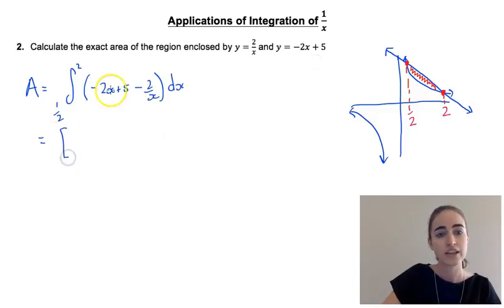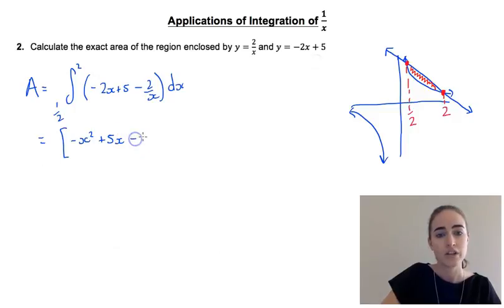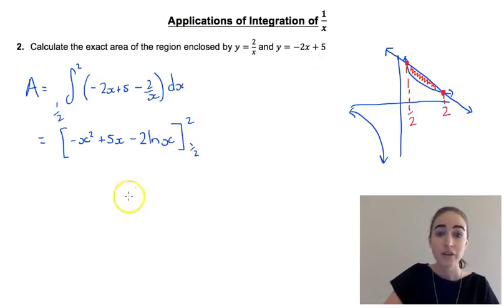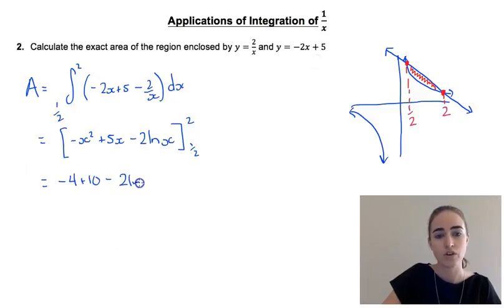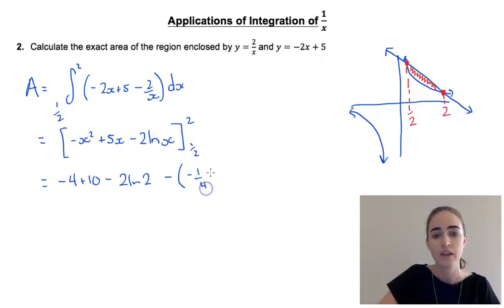Integrating each part: minus 2x integrates to minus x squared, and plus 5x stays as plus 5x, and integrating 2 over x gives minus 2 log to the base e of x. That's evaluated between 2 and one half. Substituting in 2 gives minus 4 plus 10 minus 2 log 2, then we subtract the result of substituting in one half: minus one quarter plus 5 over 2 minus 2 log to the base e of one half.